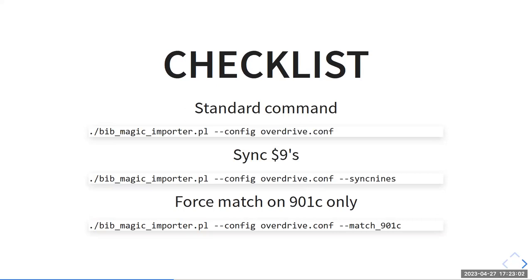There's an alternate command. If you want to run the sync nines component, you do dash dash sync-nines and it'll go back through all the Evergreen database, read your config file, and retroactively add all those nines. If you want it to just match on the 901C — which is the Evergreen match point, the ID number of the bib — you can pass that, restricting matching to that. That would be for a case like Markive, where you're sending bibs to a vendor and getting them back, and want them overlaid from the vendor's cleanup process.